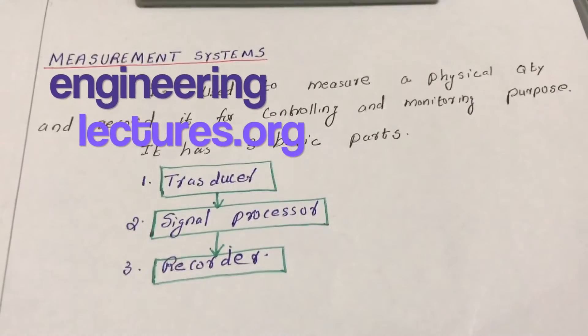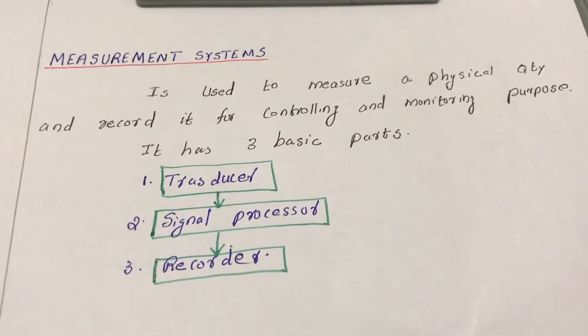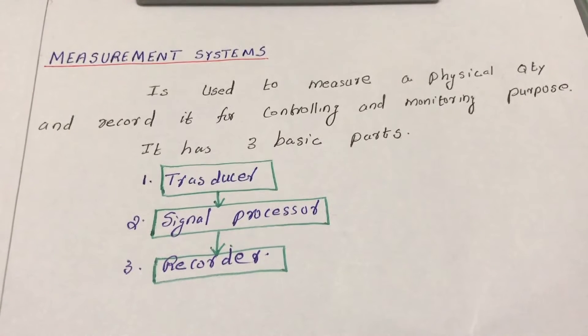In this video, we will discuss measurement systems in mechatronics. A measurement system is used to measure a physical quantity and record it for controlling and monitoring purposes.